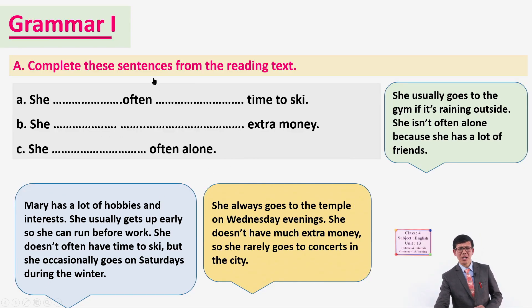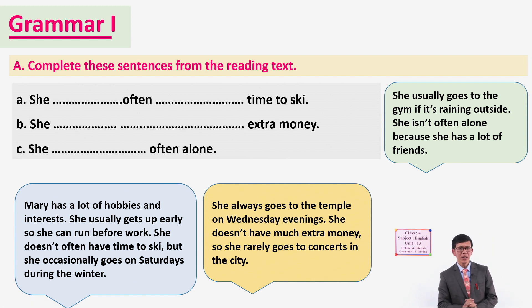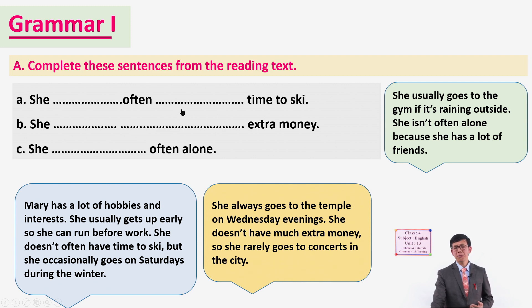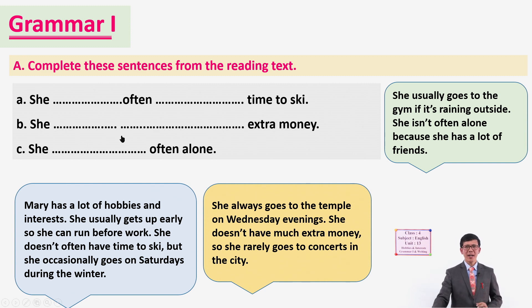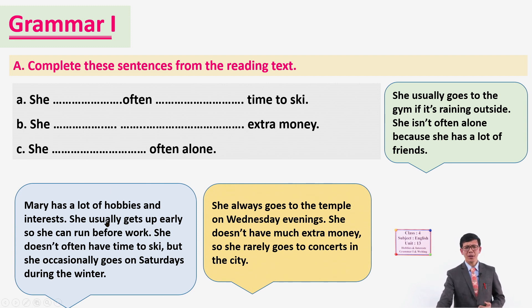Without further delay, let's move on to our lesson today - Grammar One. In this section, Exercise A, we are going to complete the sentences from the reading text we read in our previous class. We are going to find some missing information given in the sentences. I have taken part of our reading text here. Look at what is missing in sentences A, B, and C.